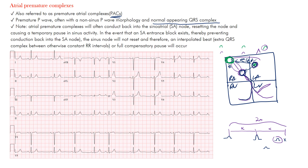Atrial premature complexes often conduct back to the sinoatrial node, resetting it and causing a temporary pause in sinus activity. In the event of SA entrance block — meaning the impulse can't enter the sinus node — it won't reset. We'll get an interpolated beat: an extra QRS complex between otherwise constant R-to-R intervals. A full compensatory pause is also possible. The key concept is that the fastest pacemaker of the heart sets the electrical activity, which is why these ectopic foci fire faster than the sinus node, producing those premature beats.